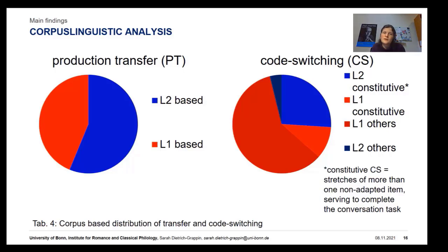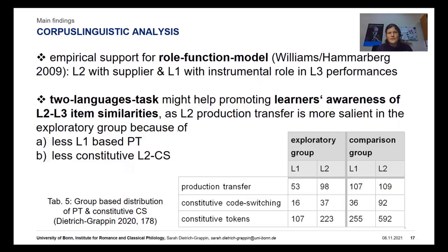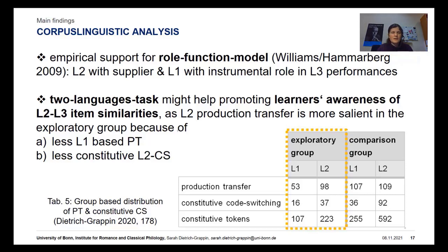Whereas in all other pragmatic functions, code switching was almost exclusively L1-based, with the exception perhaps of participant-related switching. But all the exolingual and regulating switches — the learner-specific and discourse-related switches — were L1-based. So there is strong empirical evidence for the role-function model in my study, which, in contrast to Williams and Hammerberg, is a cross-sectional study conducted in a formal learning context with adolescents. The role-function model states that in L3 performance, L2 works in a supplier role and L1 in an instrumental role. Furthermore, a two-languages task might raise pupils' awareness of instances of L2-based production transfer, since there was less L1-based production transfer and less L2-based constitutive code switching in the exploratory group.